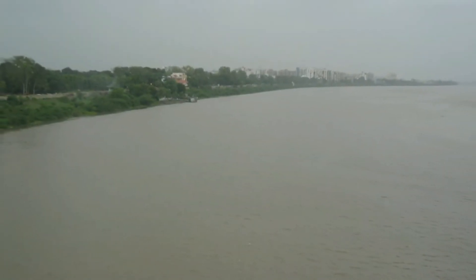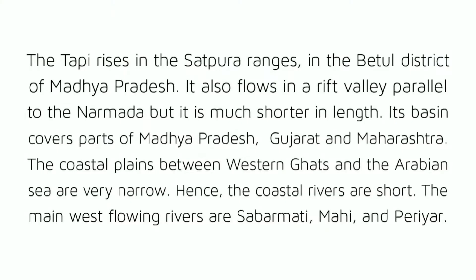The Tapi Basin: The Tapi rises in the Satpura Ranges in the Betul district of Madhya Pradesh. It also flows in a rift valley parallel to the Narmada but is much shorter in length. Its basin covers parts of Madhya Pradesh, Gujarat and Maharashtra. The coastal plains between the Western Ghats and the Arabian Sea are very narrow; hence the coastal rivers are short. The main west-flowing rivers are Sabarmati, Mahi and Periyar.